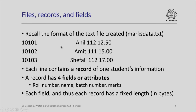First, we recall the format of the marks data dot txt file which we created through a program last time. We had the roll number, the name, the batch and the marks for every student written in a line, and there were as many lines as there were students. Note that we had actually created text data with values separated by blank spaces. Each line contains a record of one student's information, with four fields or attributes.